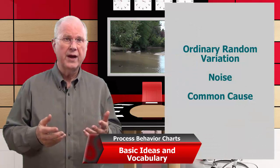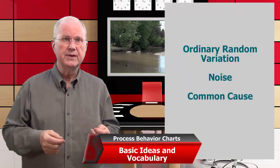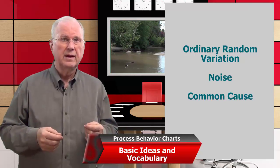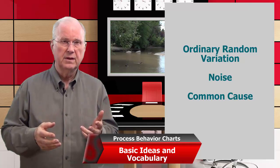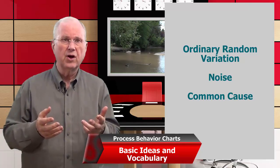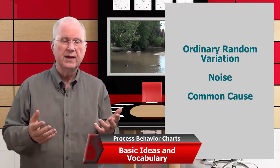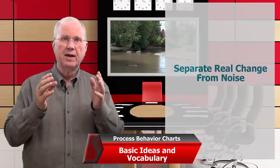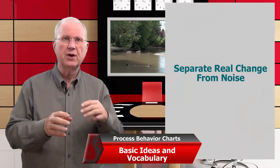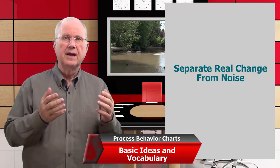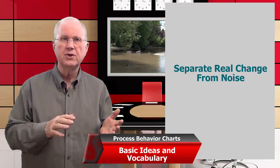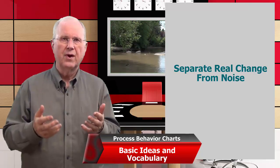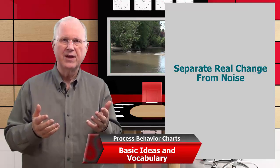The other kind of variation is just random noise, and practically all sets of measurements contain some of it. We call that noise, random variation, common cause. Individual random data are not interesting. There's no point in trying to find the cause for a difference between any two points in a set of random data, because the difference between two random numbers is just another random number. The fundamental job of the process behavior chart is to separate signal from noise. And it will tell you if what's happening is likely a real change or best attributed to just random variation.